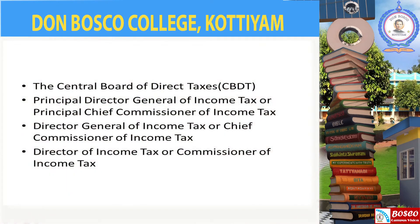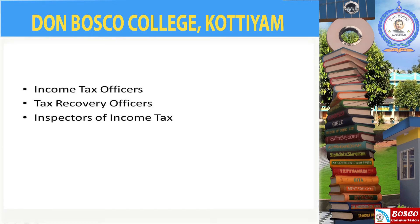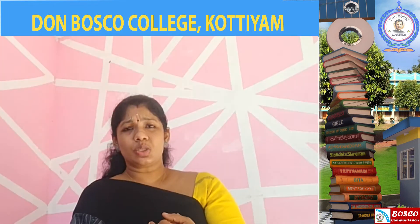The Central Board of Direct Taxes is also known as CBDT. Below it are: Principal Director General or Principal Chief Commissioner; Director General or Chief Commissioner; Director or Commissioner; Additional Director or Commissioner of Income Tax Appeals; Joint Director or Joint Commissioner or Joint Commissioner of Income Tax Appeals; Deputy Director or Deputy Commissioner; Assistant Director or Assistant Commissioner; Income Tax Officer; Tax Recovery Officer; and Inspectors of Income Tax.